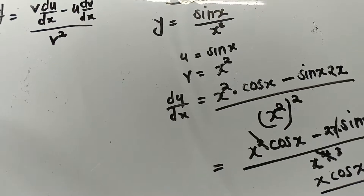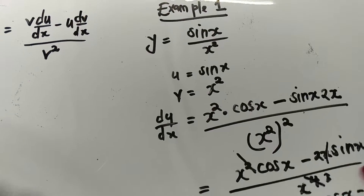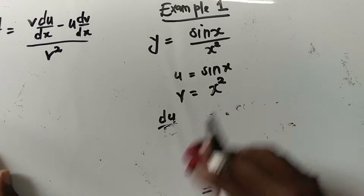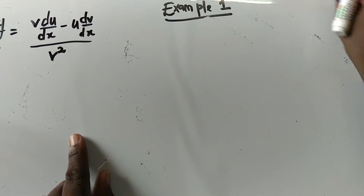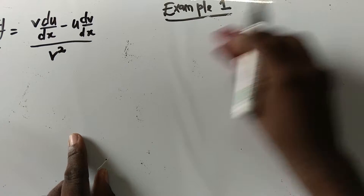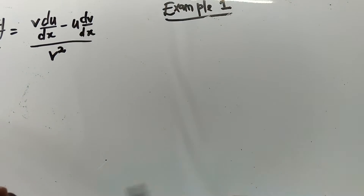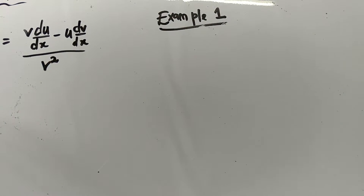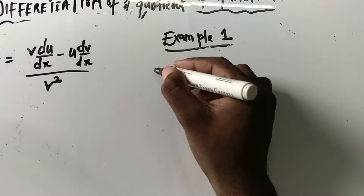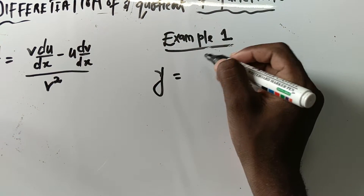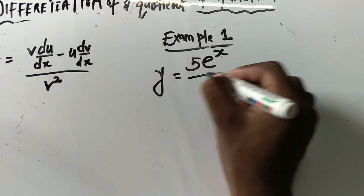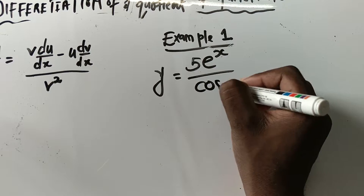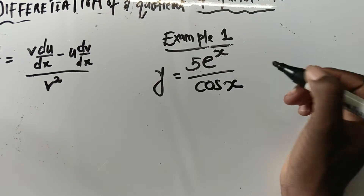Let's do another example. This time y equals 5e to the power of x, divided by cos(x).